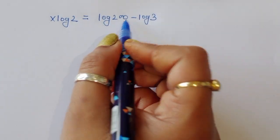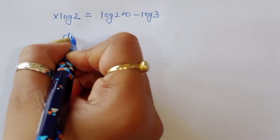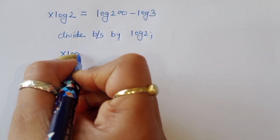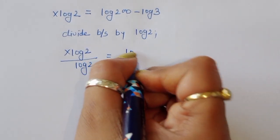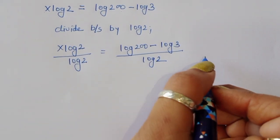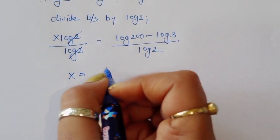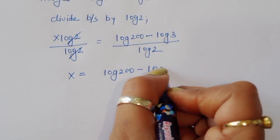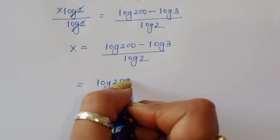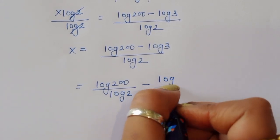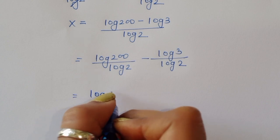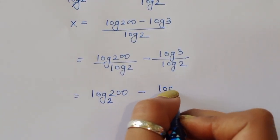So x·log(2) equals log(200) minus log(3). Dividing both sides by log(2), we get x equals log(200) minus log(3), all divided by log(2). Separating the terms, this becomes log(200)/log(2) minus log(3)/log(2), which we can write as log₂(200) minus log₂(3).